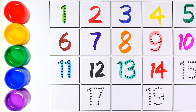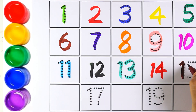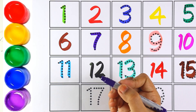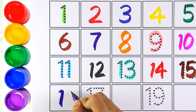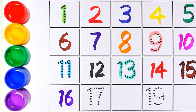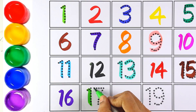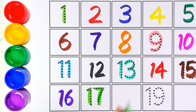Brown color, I'm writing number 15 — one and five makes the number 15. Now let's use purple color for number 16 — one and six makes the number 16. Light green color — kids, can you guess which number it is?